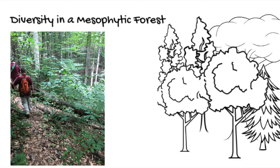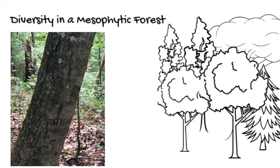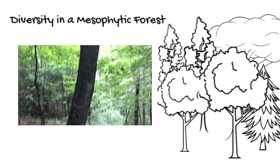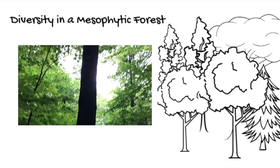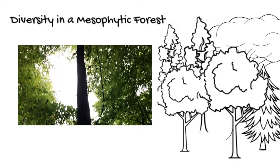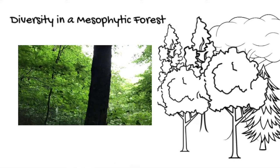Hemlocks right now are being treated due to the hemlock woolly adelgid that feeds on the sap at the base of the hemlock needles, which disturbs the nutrient flows and causes the needles to change from a deep green to a grayish green. This causes the tree to actually starve to death.